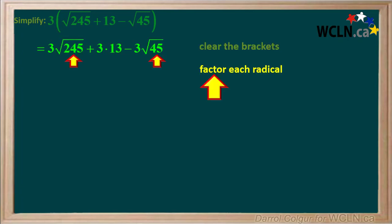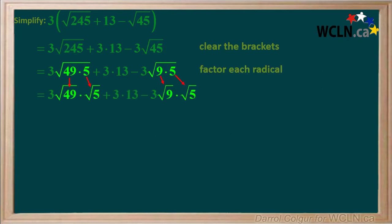Our next step is to factor the radicals 245 and 45. 245 is 49 times 5, and 45 is 9 times 5. The square root of 49 times 5 is broken up to the square root of 49 times the square root of 5. The square root of 49 is 7, and the square root of 9 is 3.